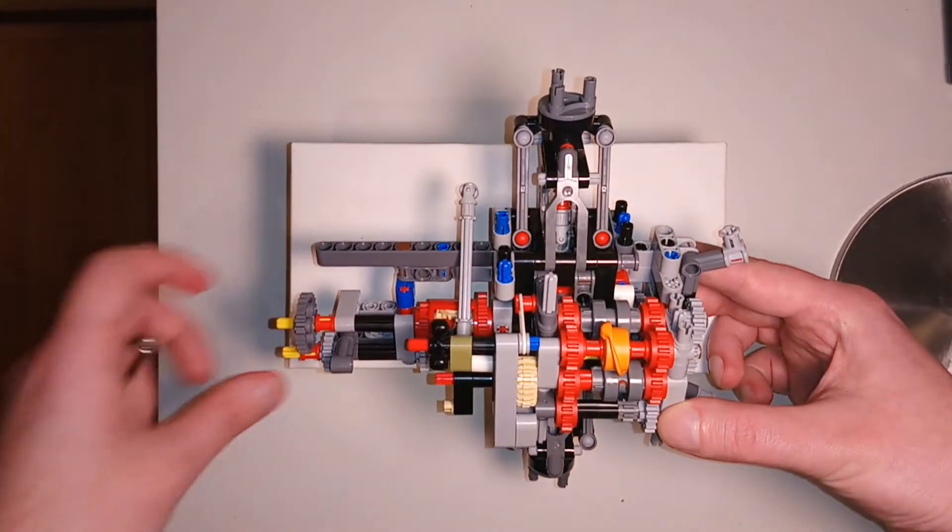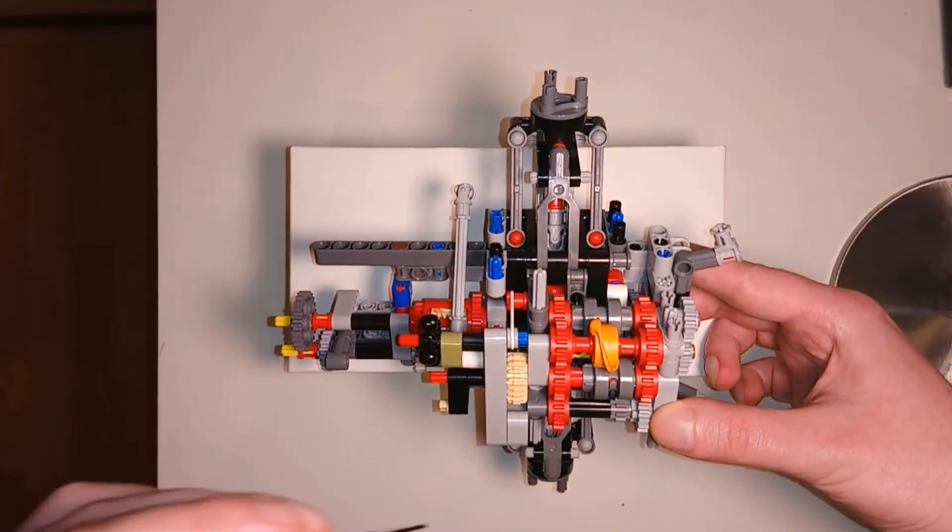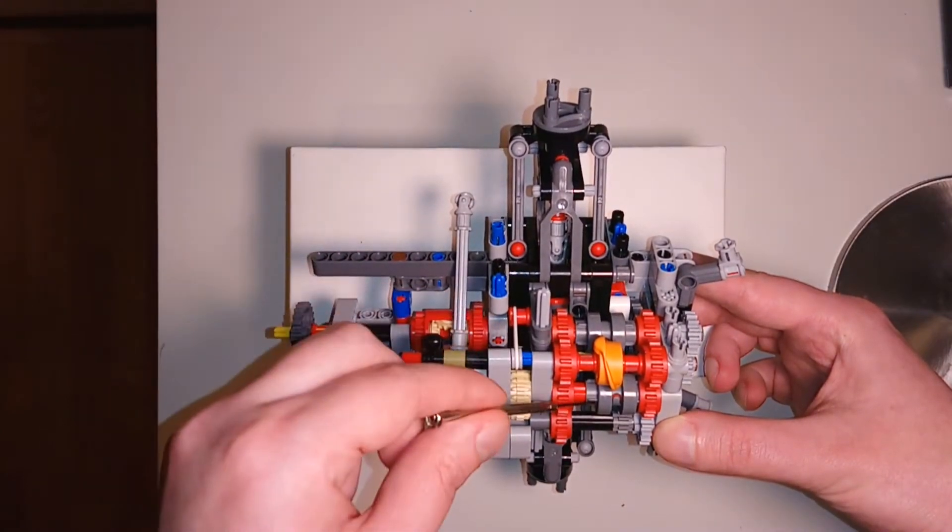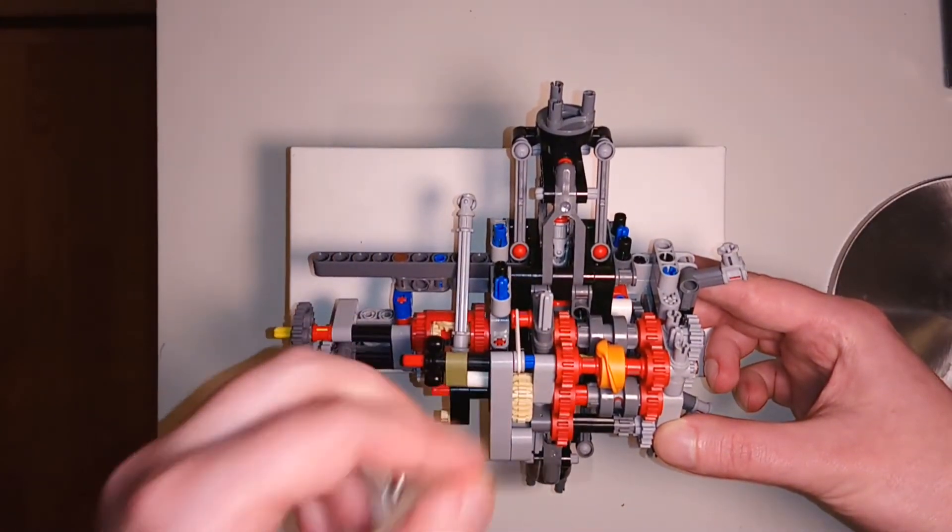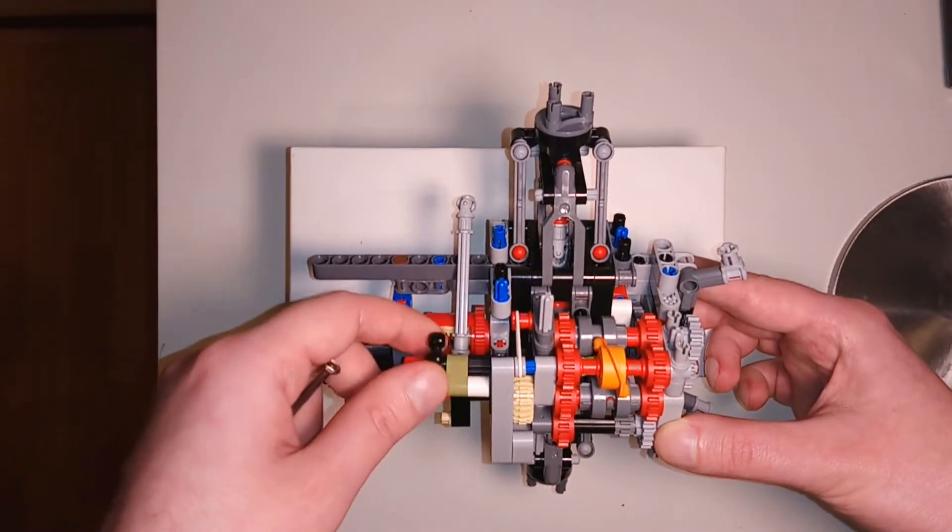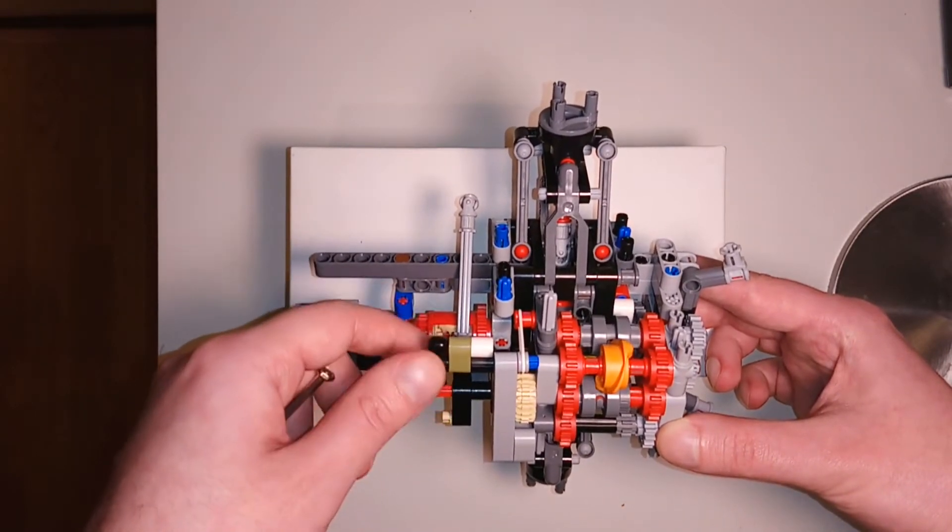Second is the gear switching mechanism. It consists of this orange piece and these two gray pieces. When the orange piece is rotated, it shifts each of the two gray pieces into one of three positions,